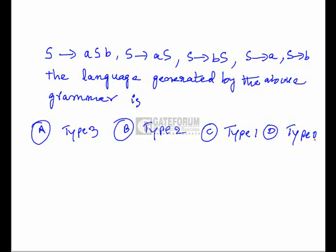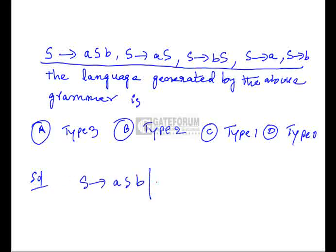Next question: given grammar productions S → aSb | aS | bS | a | b, the language generated by the above grammar is to be identified. The options are type 3 (regular), type 2 (context-free), type 1 (context-sensitive), and type 0 (recursively enumerable). We need to find out which type this grammar generates, so we must first determine the language it produces.